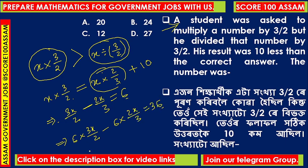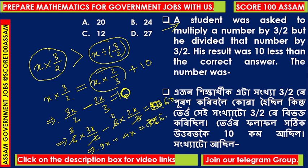Multiplying through by 6 to clear fractions: 6 × (3x/2) minus 6 × (2x/3) equals 60. That gives 9x minus 4x equals 36, so 5x = 36. Solving gives x = 36/5. Checking with the answer options, the number that satisfies the condition corresponds to the correct option.